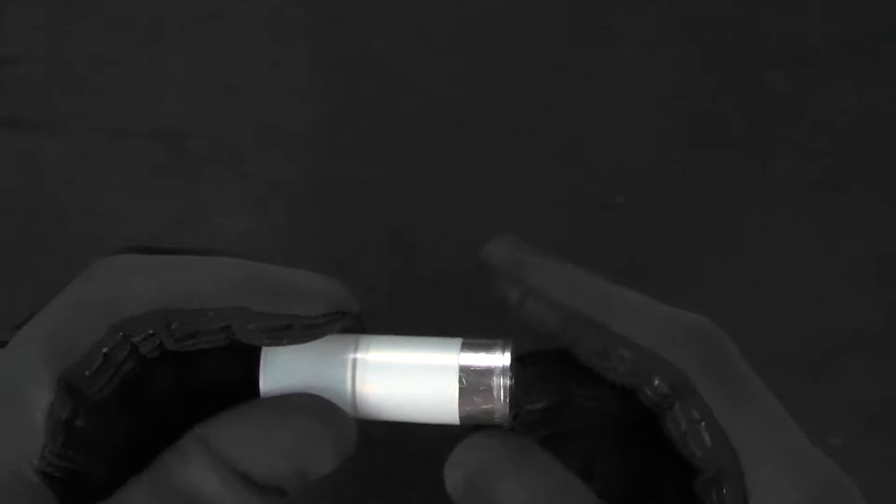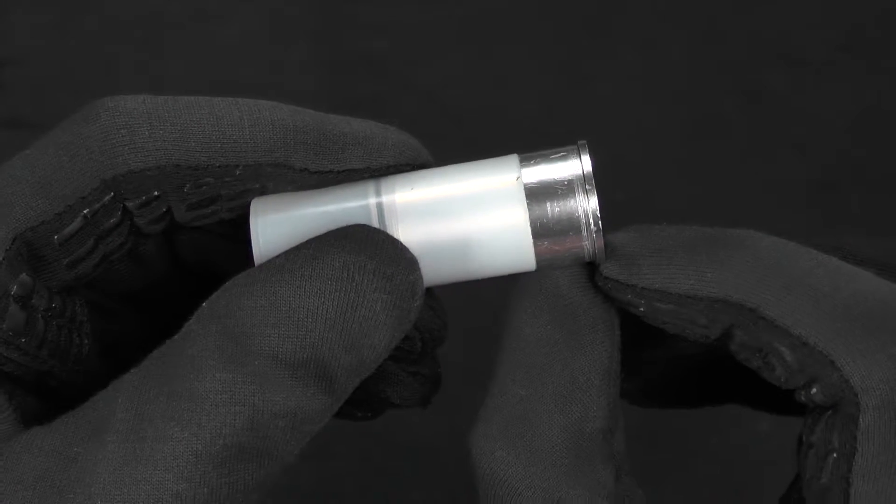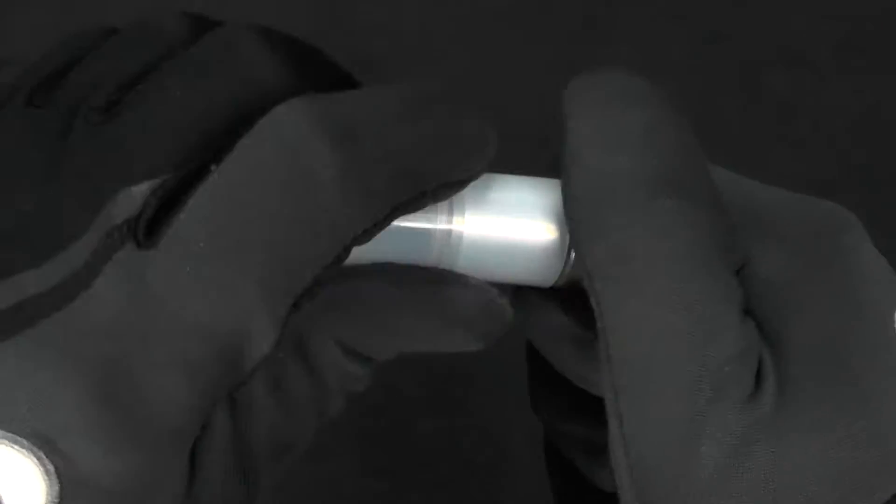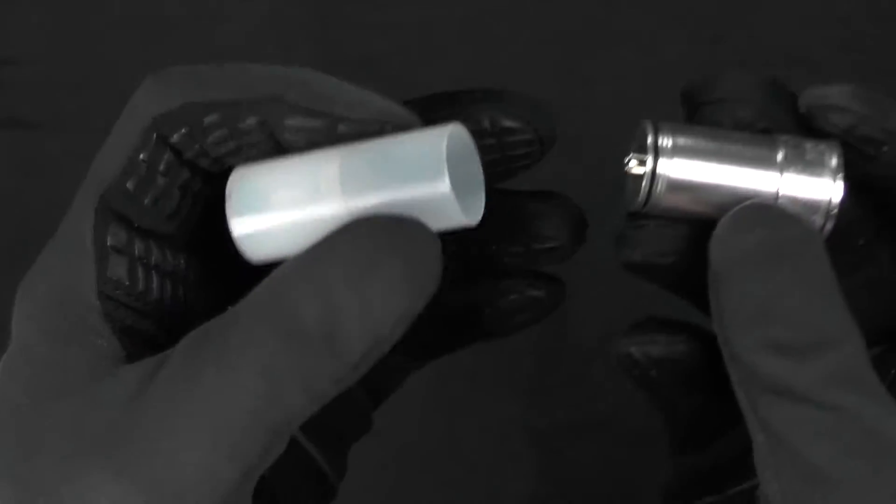Basically what you want to do is you want to grab onto this metal section, both the rim and the metal shell, and then undo the plastic body. It should come off fairly easily. It comes out like this.